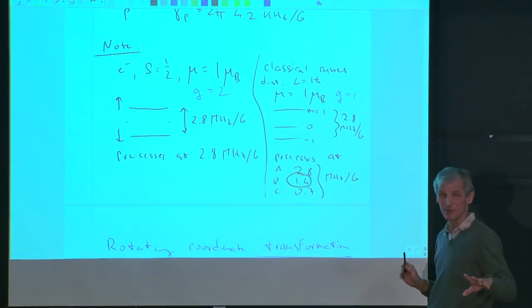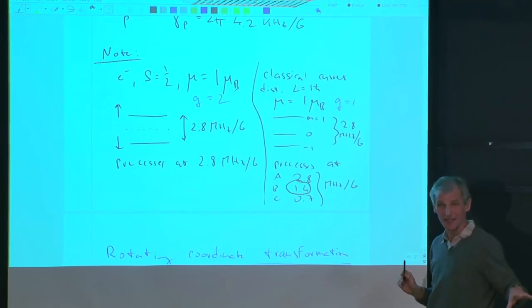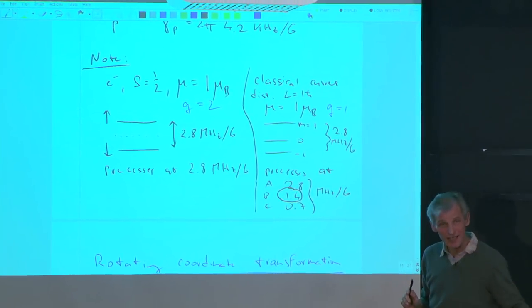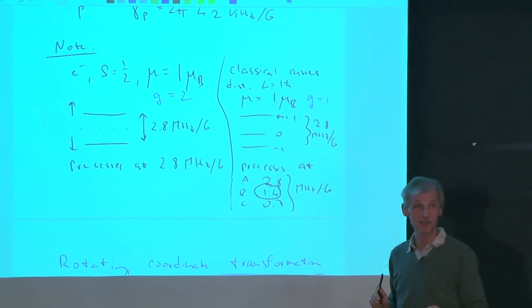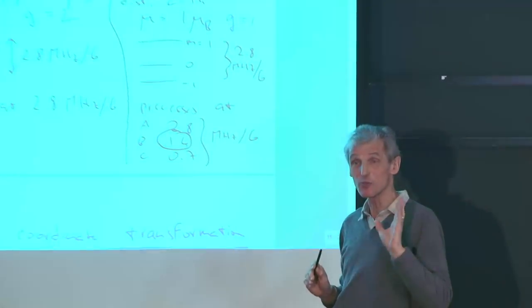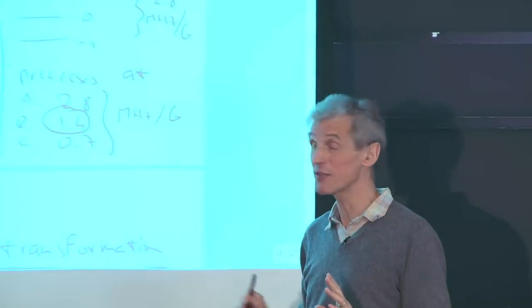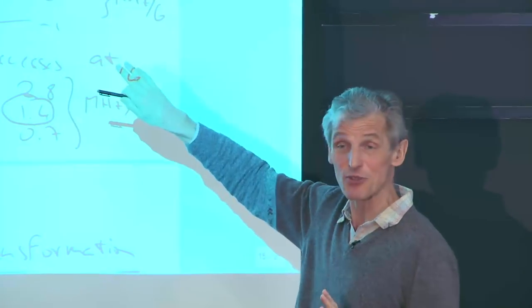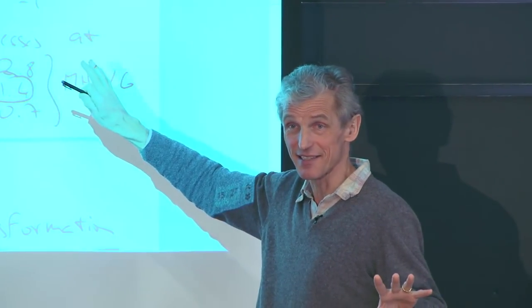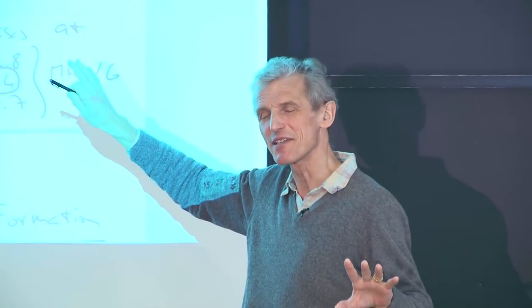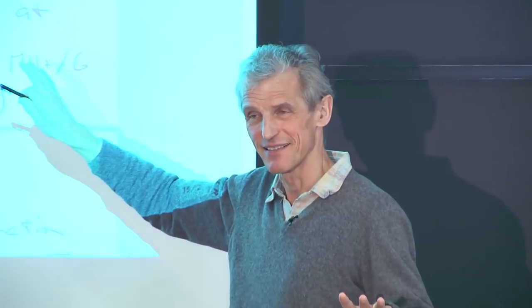Write down for yourself what is the magnetic moment of an electron, what is the magnetic moment of a classical particle which has one unit of angular momentum, and try to re-derive it. The way I did it is deceptively simple, but whenever you think about it, you will get confused about some factors.